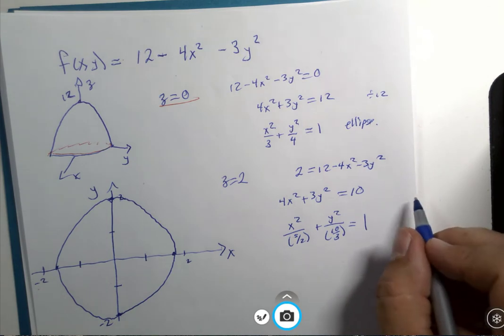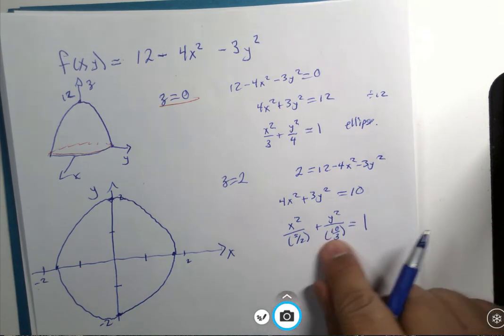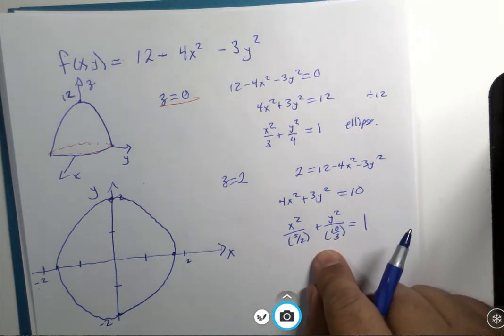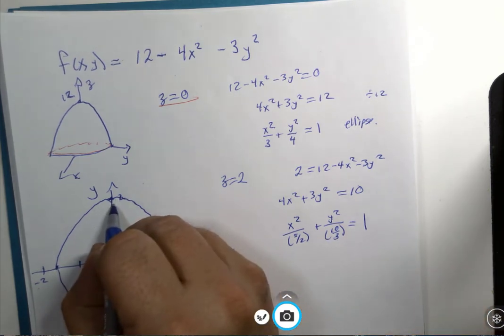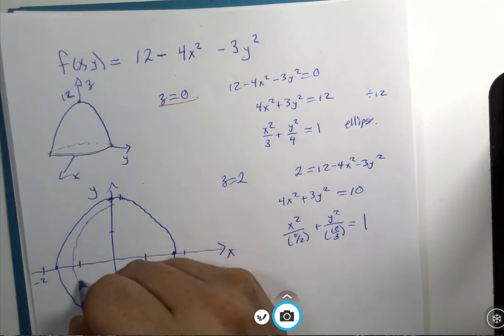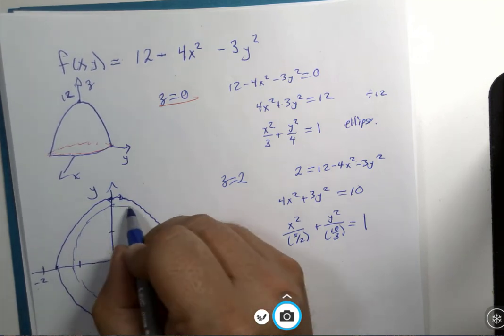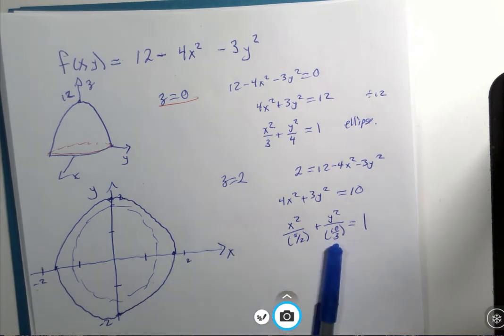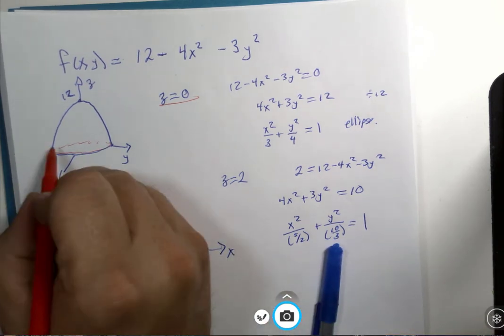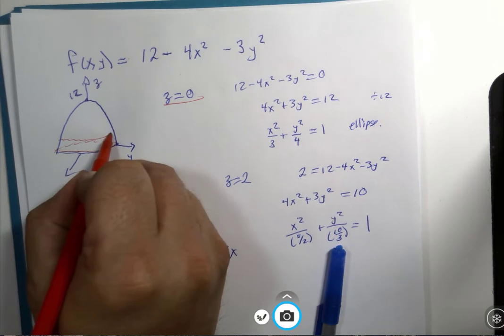And you'll have a slightly smaller ellipse, slightly smaller ellipse. And it would still be taller in the up and down direction. And that would represent the ellipse that's two units up.